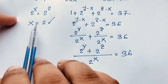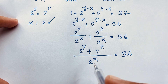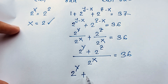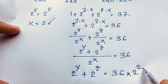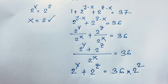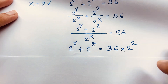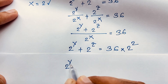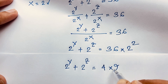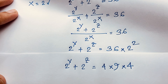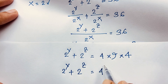Recall that x equals 2, so 2 to the power x equals 4. Therefore, 2 to the power y plus 2 to the power z equals 36 times 4, which is 144. We can write 144 as 4 squared times 9. So 2 to the power y plus 2 to the power z equals 4 squared times 9.